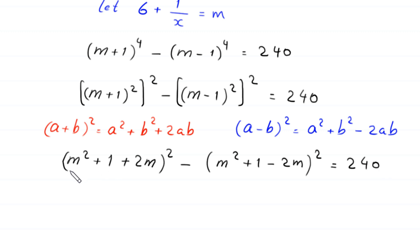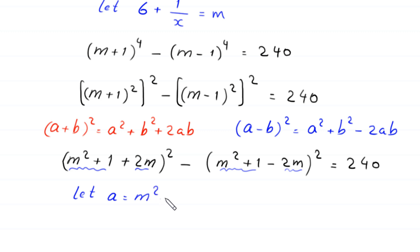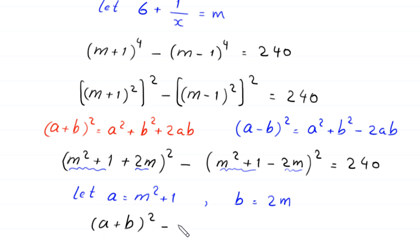Here we have m² + 1 in both expressions, and 2m in both. So we let A = m² + 1 and B = 2m. This equation becomes (A + B)² minus (A − B)² is equal to 240.